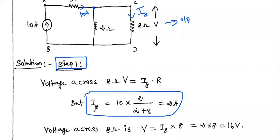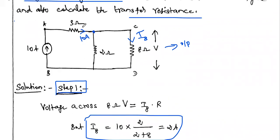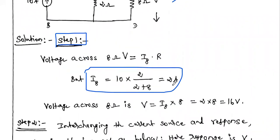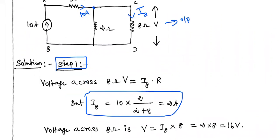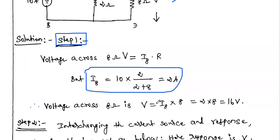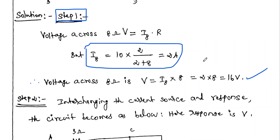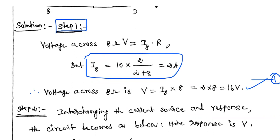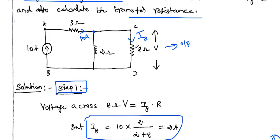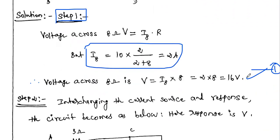According to the current division law, the current through the 8-ohm resistor equals the total current 10 amps multiplied by the opposite resistance 2, divided by the sum 2 plus 8, giving 2 amps. Therefore, the voltage across the 8-ohm resistor is 2 × 8 = 16 volts. This is equation one — the output voltage is 16 volts due to the 10-amp source.